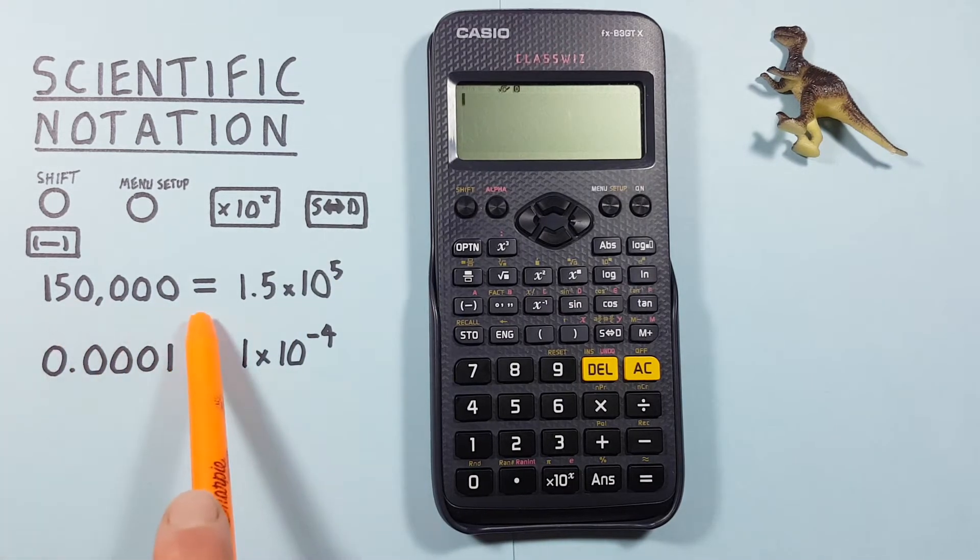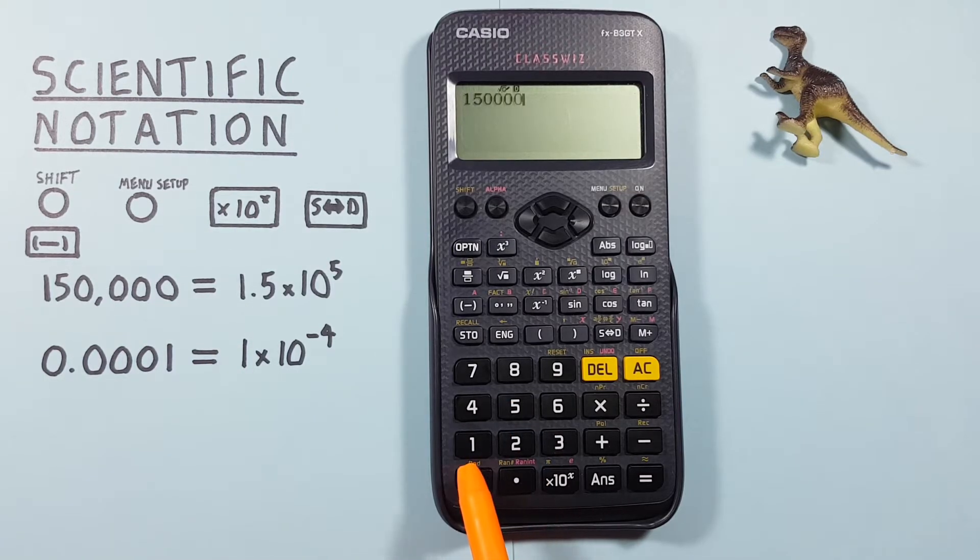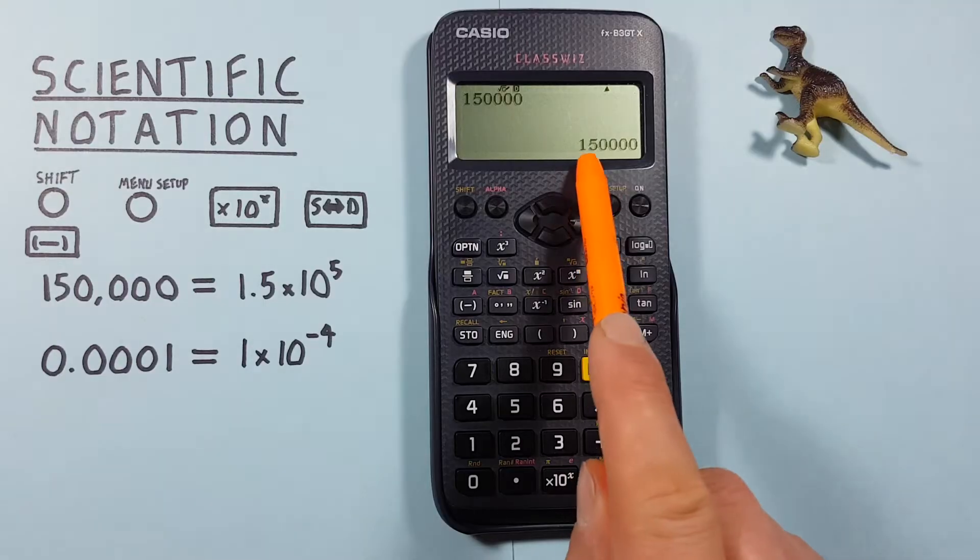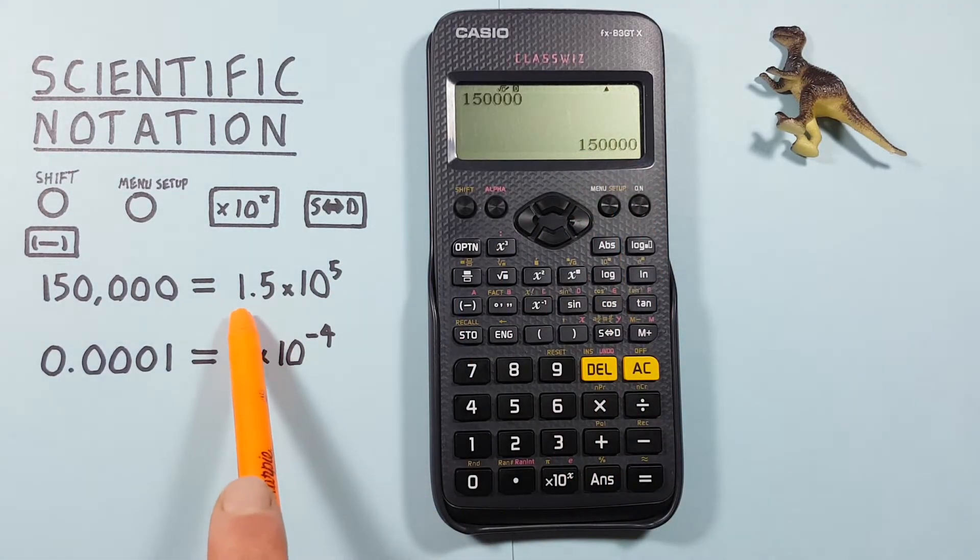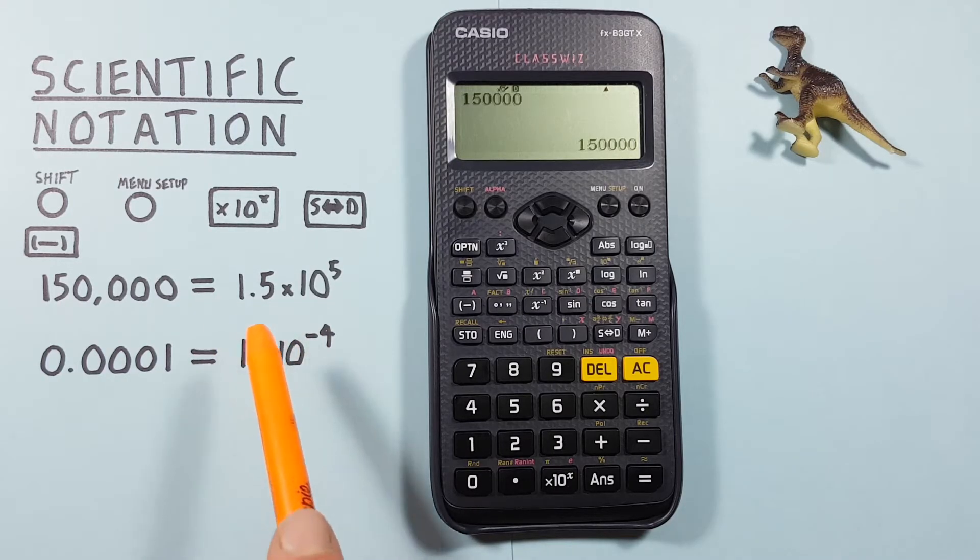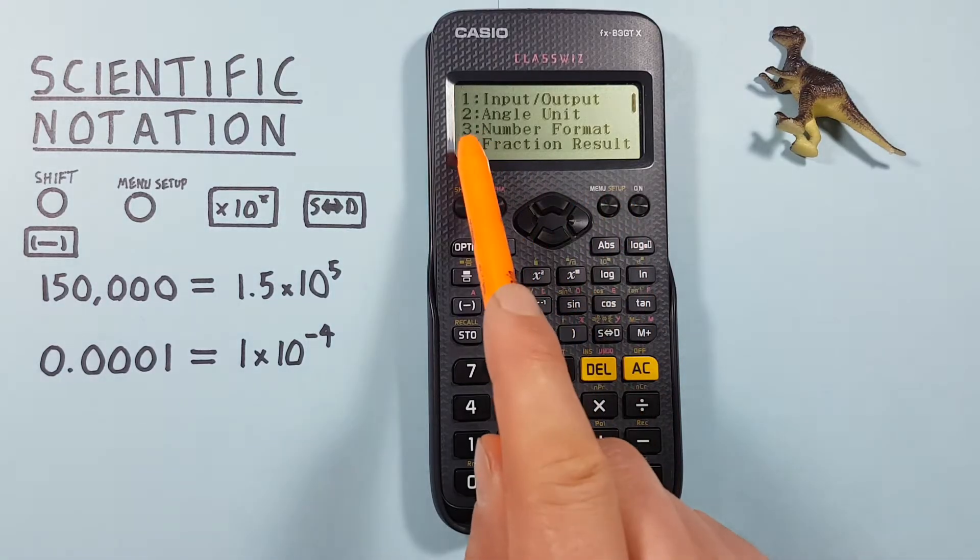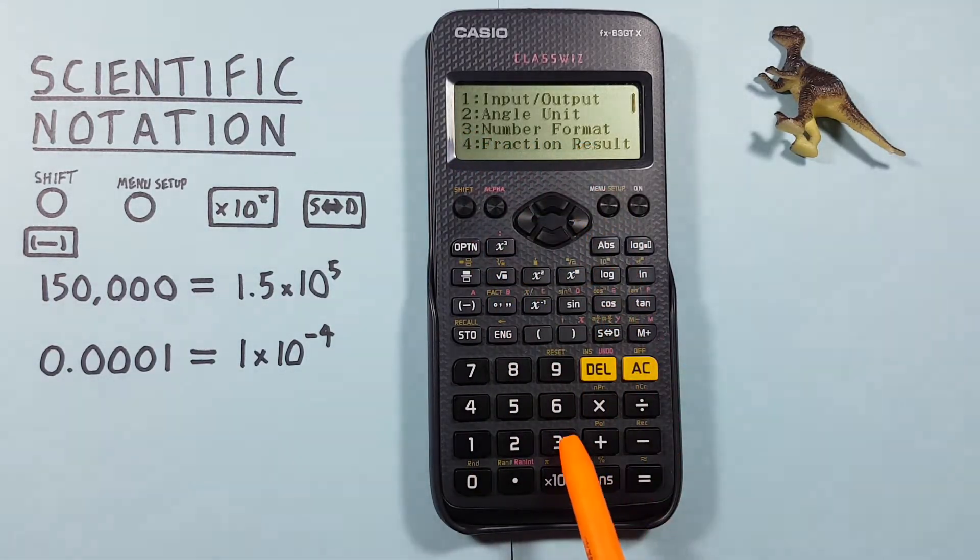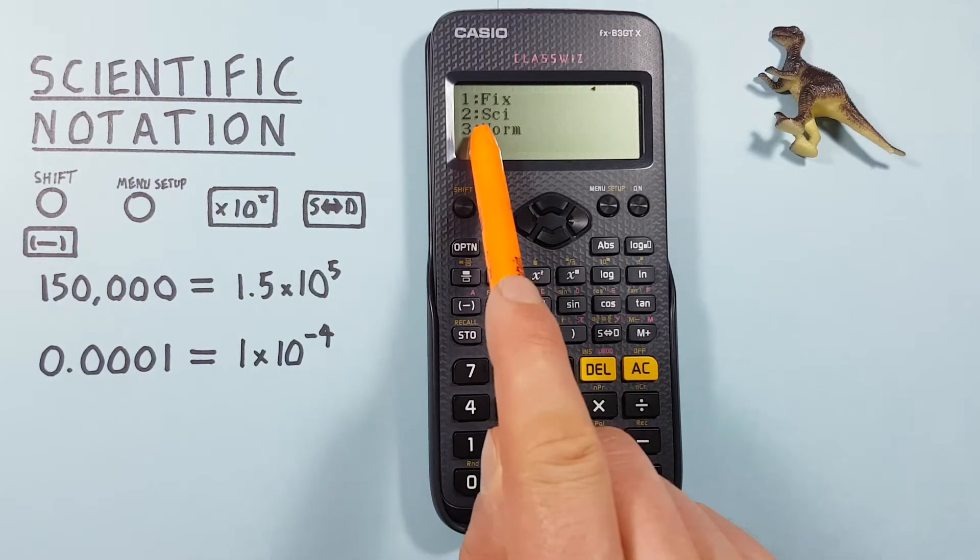Normally when we enter a number like this on our calculator, it'll just appear with all the zeros as we wrote it. But if you want it to appear in scientific notation mode, press shift menu, then number three for number format, and then choose number two for scientific notation mode.